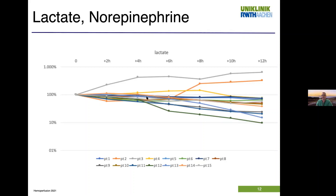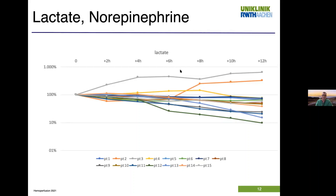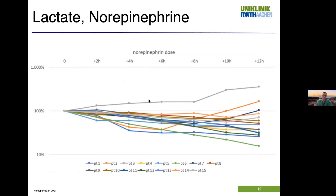Lactate drops in many patients; in some it doesn't, and those actually end up dying. Patients who fail to improve with maximum therapy of course deteriorate within the next couple of hours. Norepinephrine doses go down by a multiple-fold in most patients on the logarithmic scale; in some there is a rebound, and in some patients there is no effect — those are so sick that treatment is probably futile anyway. We see a trend to improvement of markers of shock, and we use the device not just to improve 28-day or six-month survival, but to improve and achieve faster shock resolution, hoping that will translate to better survival in the long run.